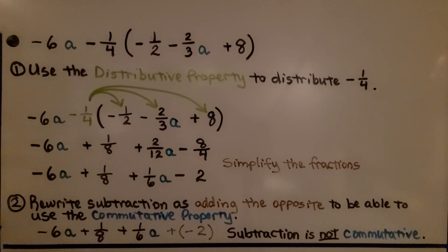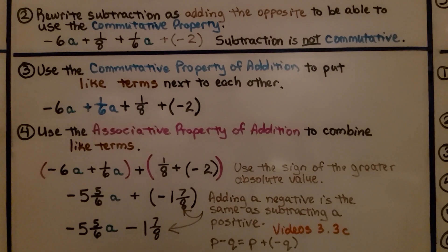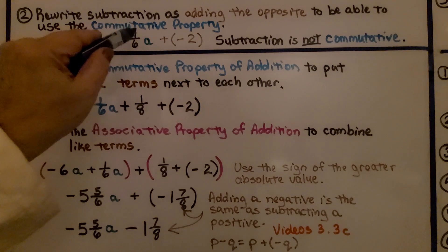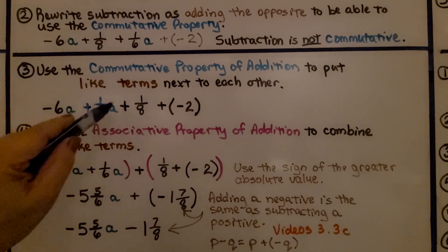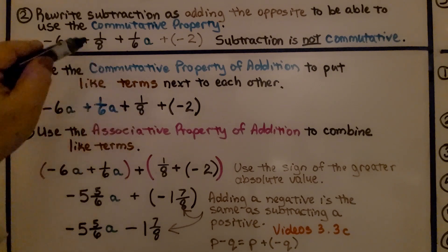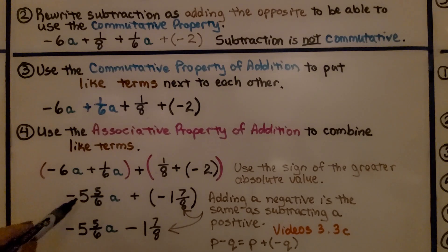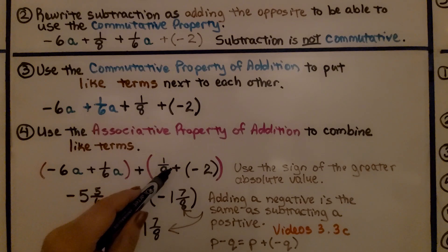We rewrite the subtraction as adding the opposite to use the commutative property of addition, since subtraction is not commutative. So minus 2 becomes plus negative 2. Now we use the commutative property to put like terms next to each other: negative 6a and positive 1/6 a together, then plus 1/8 and plus negative 2. Using the associative property to combine like terms: negative 6a plus 1/6 a gives us negative 5 and 5/6 a.